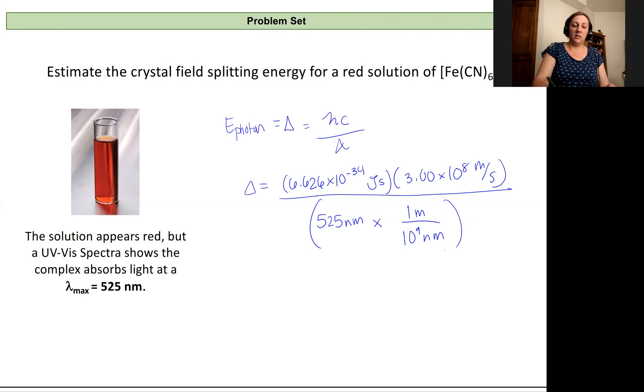And so after I set this up and recognize that it's really just plugging into my calculator, when I do that I get an answer that is 3.79 times 10 to the negative 19th joules and so that's going to correspond to our energy for the difference between our 2d energy levels in this octahedral complex.